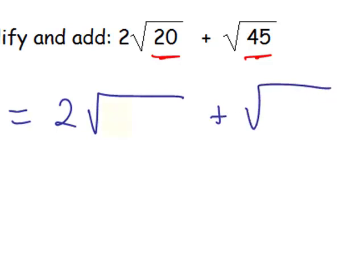And 20 has a perfect square of 4 times 5. Similarly, 45 is 9 times 5, and I've chosen, of course, 4 and 9 because those are perfect squares.